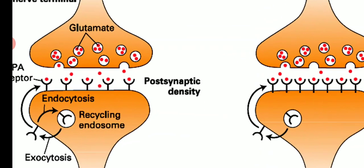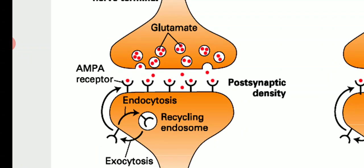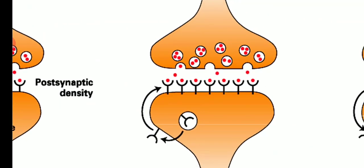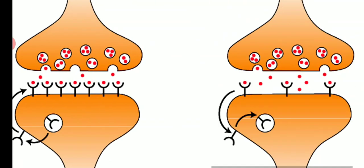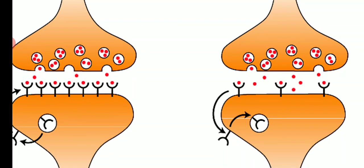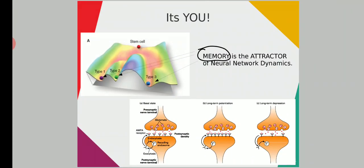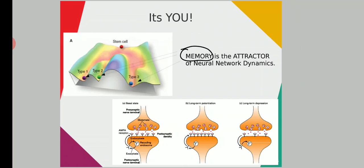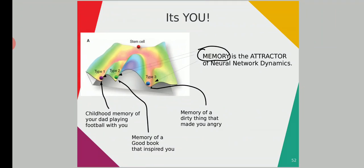This is your standard neural circuit. Whenever you are creating a memory, you are changing this circuit. It is you — your memory is changing the circuit. If you are not storing a memory, the circuit changes and the number of receptors decreases. The nature of the neural circuit depends on whether you are creating a memory or forgetting something. Memory decides what type of neural circuit will be there inside your brain — memory is the attractor. There can be different types of memory: type 1, type 2, type 3 — three attractors. One can be a very prominent memory, like your childhood memory of playing football with your father, or a good book that inspired you, or something that made you angry.